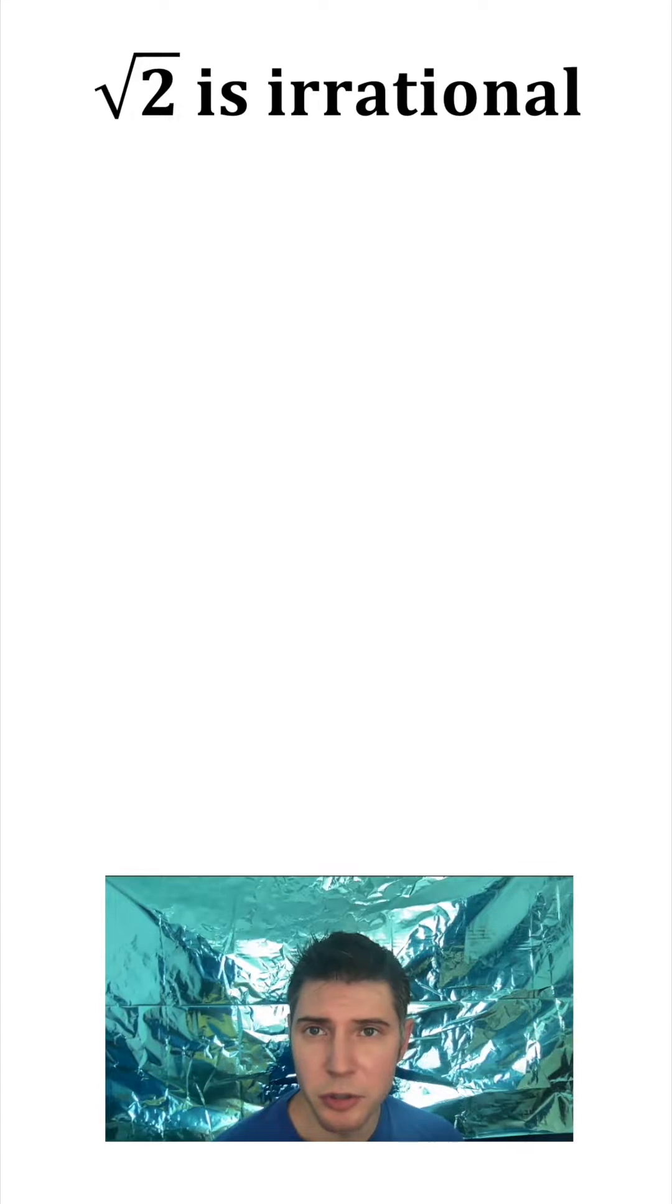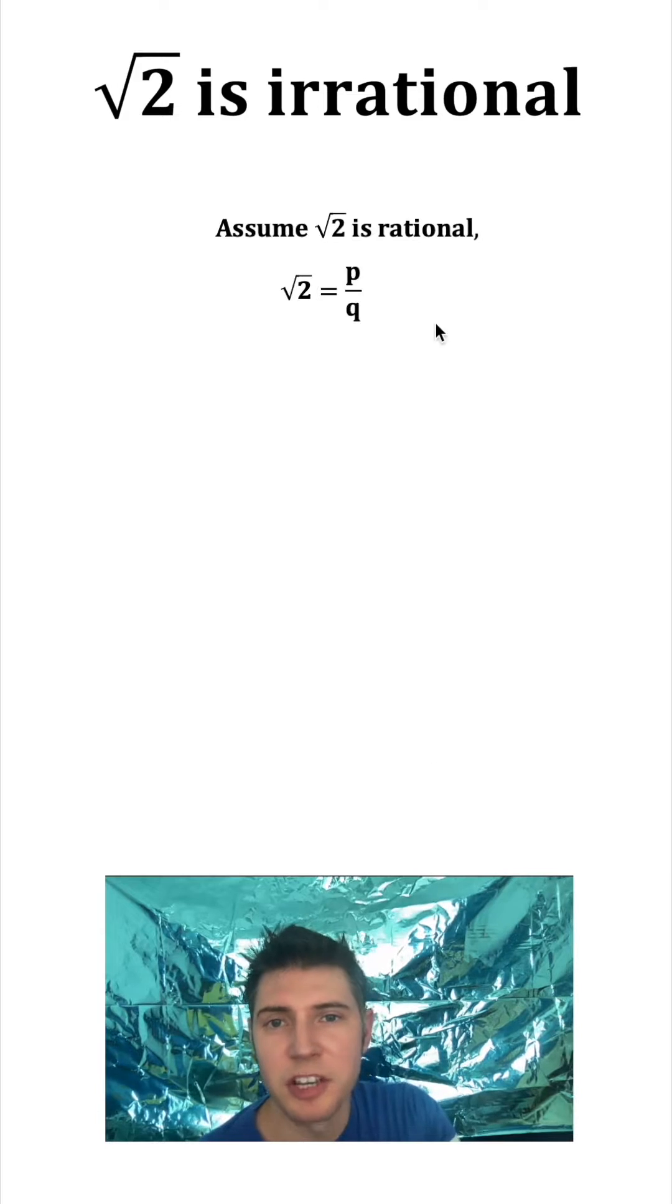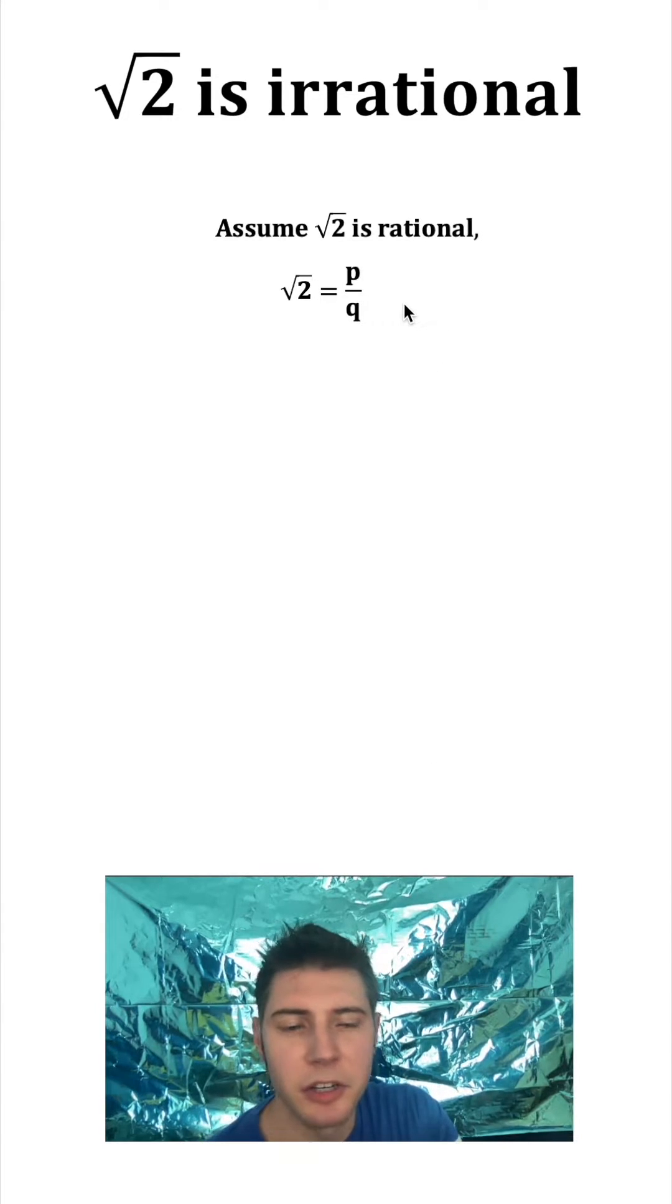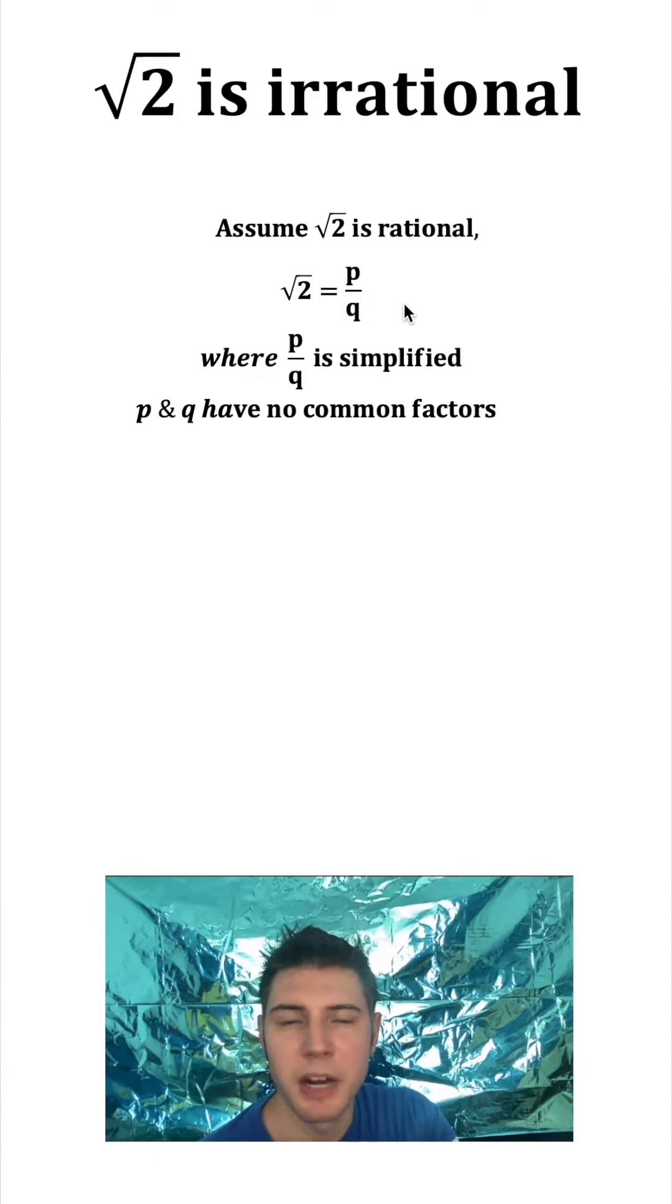So the way we're going to prove that square root of 2 is irrational is we're going to make an assumption that it is rational, and then find a contradiction. So we'll say square root of 2 is equal to some P over Q. And then we're going to say P over Q is going to be fully simplified. So P and Q would have no common factors.